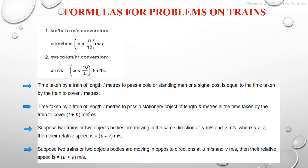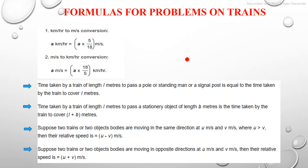Next, the time taken by a train of length L meters to pass a stationary object of length B meters is the time taken by the train to cover L plus B meters. In the previous case the pole had no length, but here we consider a stationary object with a fixed length B. For example, a train of length 200 meters crossing a platform of 300 meters in 40 seconds means the train covers 200 plus 300, that is 500 meters, in 40 seconds.